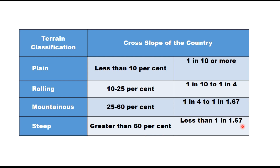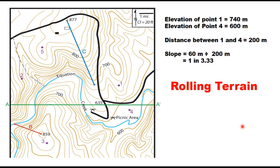Let me explain how to determine country slope with an example. On a topographical map with contours of 700 meter and 600 meter, if the elevation at point 1 is 740 meter and at point 4 is 600 meter, with a distance of 200 meter between them, the slope is 140 divided by 200, giving 1 in 1.43. Wait — if the difference is 60 meter over 200 meter, that gives 1 in 3.33, which comes under the category of rolling terrain. That is how terrains are classified in Indian standards.